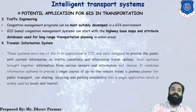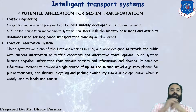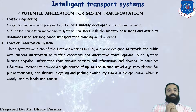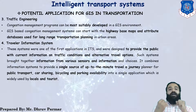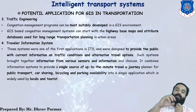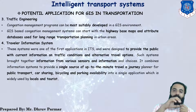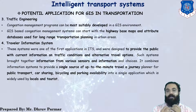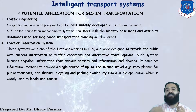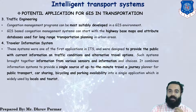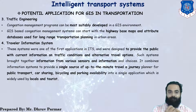The fourth application is the travel information system. This type of system is one of the first applications in ITS. It is designed to provide the public with current information on traffic conditions and alternative travel options. For example, if you want to travel somewhere, you can find out how much time is required to reach that location, or which areas have very high traffic indicated by a red signal on the map.